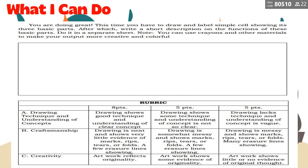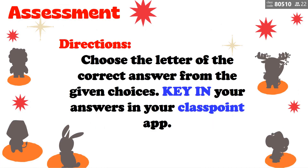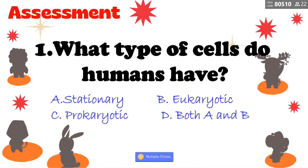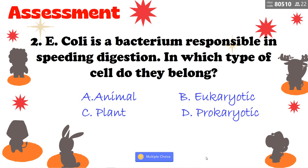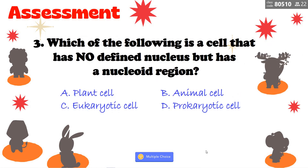Assessment directions: choose the letter of the correct answer. Key in your answer in ClassPoint. Number one — what type of cells do humans have? The correct answer is letter B, eukaryotic. E. coli is a bacterium responsible in aiding digestion — in which type of cell do they belong? That is prokaryotic. Which of the following is a cell that has no defined nucleus but has a nucleoid region? That is prokaryotic cell, letter D.